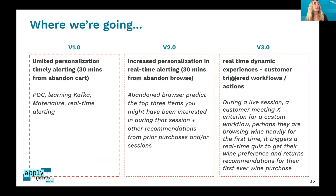Looking at where we're going: V1 is where we are right now — limited personalization, not really utilizing any data science models yet. This was our proof-of-concept phase, learning these tools and setting them up for the first time. V2 is what I just touched on with abandoned browse — starting to implement more data science modeling, predicting the top three items someone might have been interested in based on their session and past purchases.